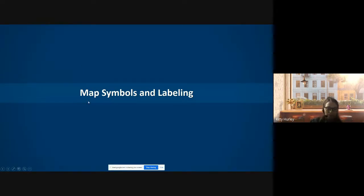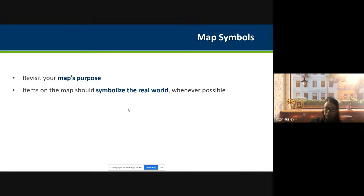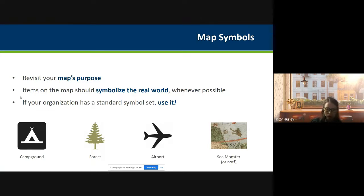Next is map symbols and labeling. It's still key to go back to the map purpose — that can really help dictate what your symbols look like. It's important to symbolize things we know in the real world: a tent for a campground, a tree for a forest, a plane for an airport, and of course the sea monster for danger. It's also very important to have a standard internal symbol set. At the DNR we have over 500 different icons that we use and continue to improve based on audience feedback.